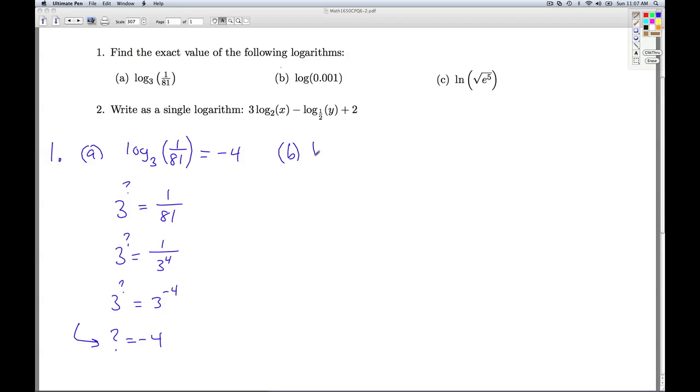Part B, we're asking for log of 0.001. Now when you see the log like this floating around, at this level anyway, the assumed base is the common base 10. So this is asking us a question, 10 to what power is 0.001? Well, I express this as a decimal, or excuse me, express the decimal as a power of 10. I'd have to move the decimal point 1, 2, 3 times over. So this is the same as 10 to the minus third power.